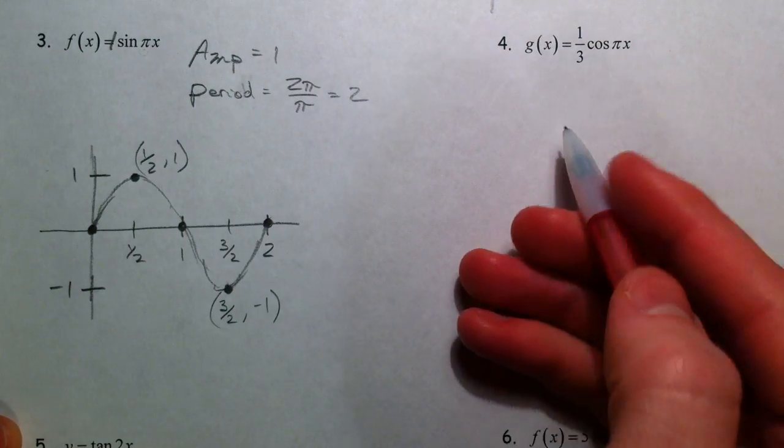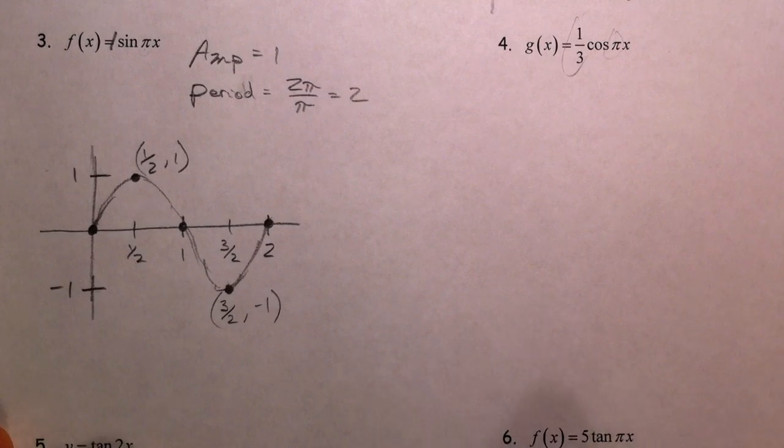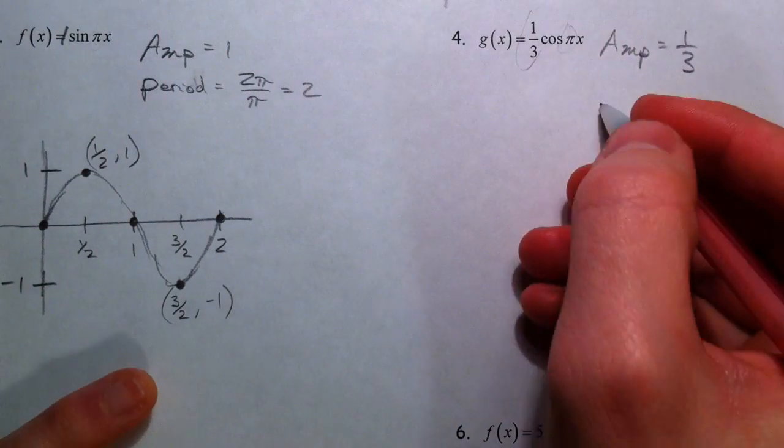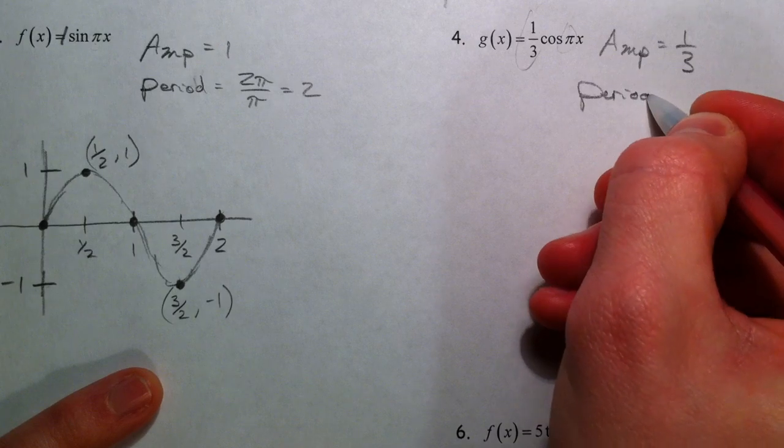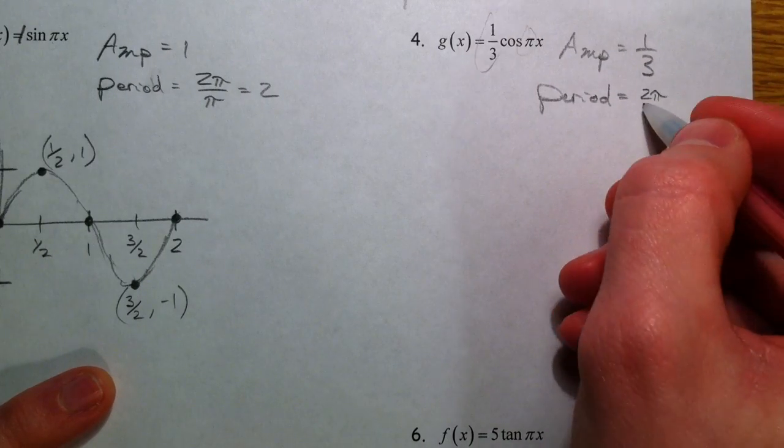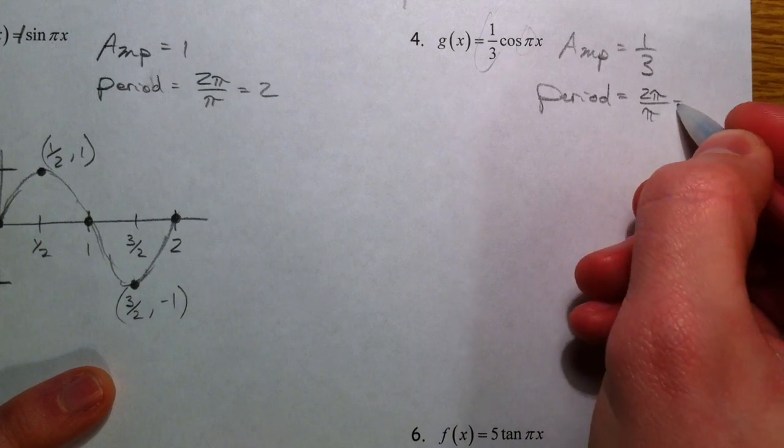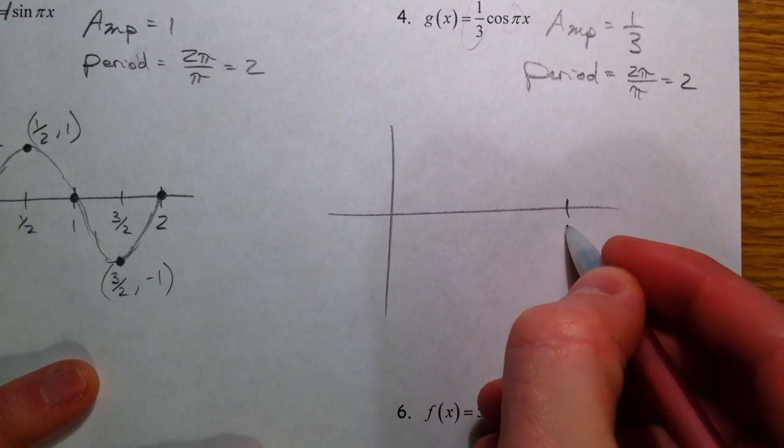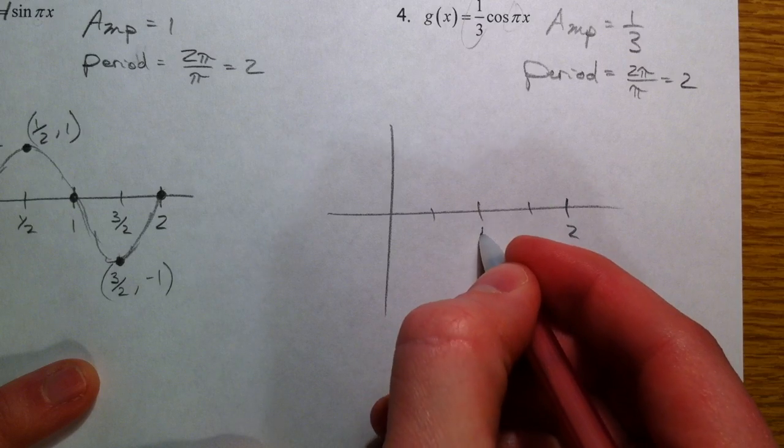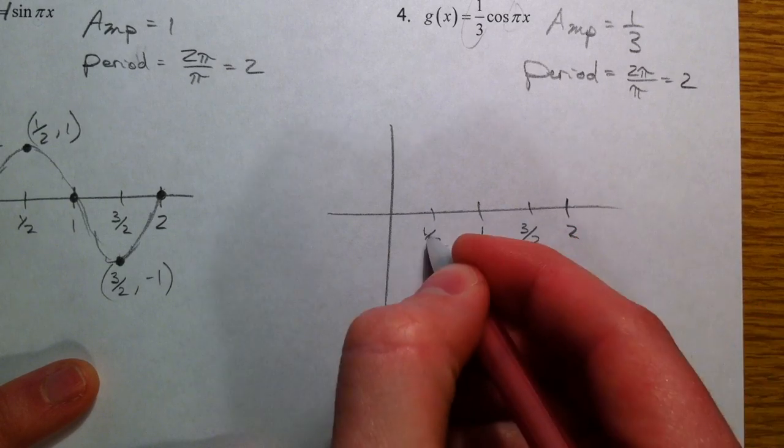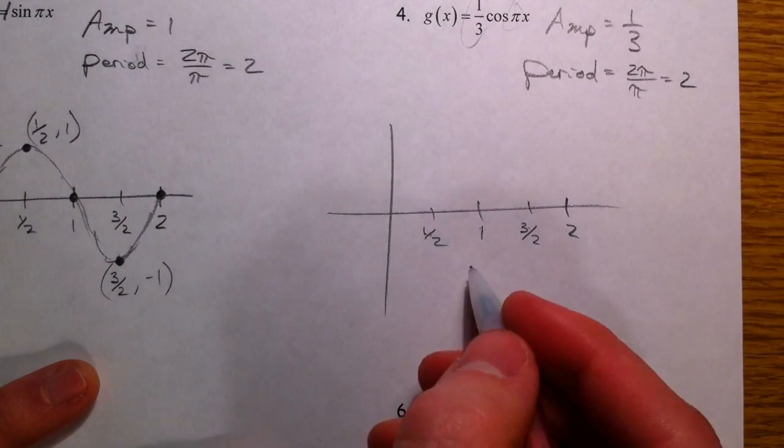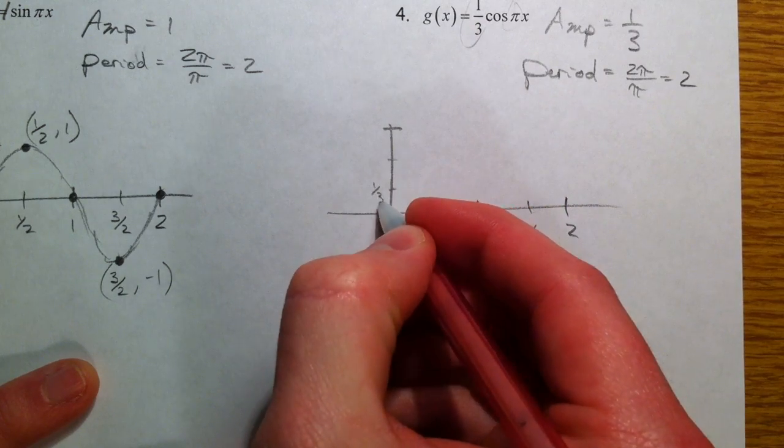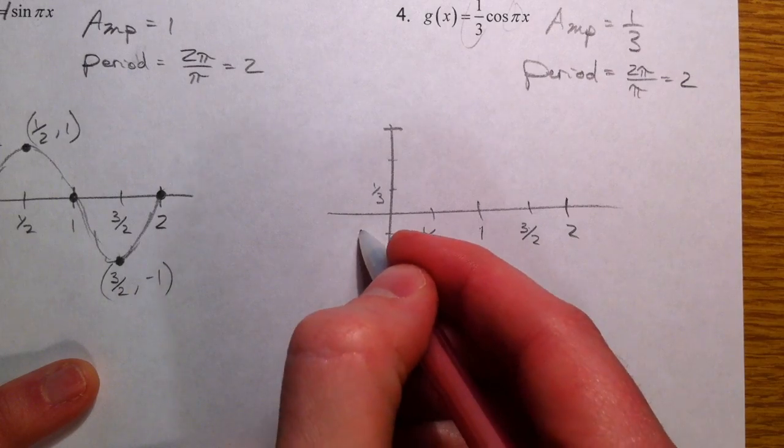Now on this next one, this 1 third and this π are affecting it. And so our amplitude is going to be 1 third. And our period, just like on the last one, is going to be 2π divided by π, which is 2. So, still going to have our 2, 1, 1 half, and 1, 2, 3 halves. The difference is going to be, instead of going up to 1 and down to negative 1, we're going to have 1 third and 2 thirds. So I'm going to mark this as 1 third. 1 third and negative 1 third.